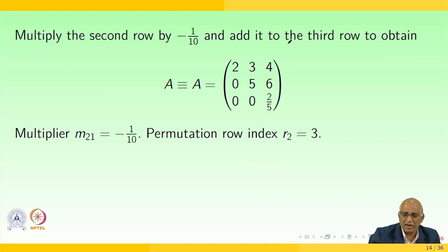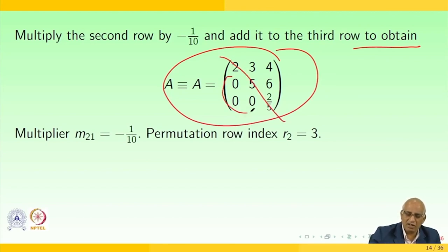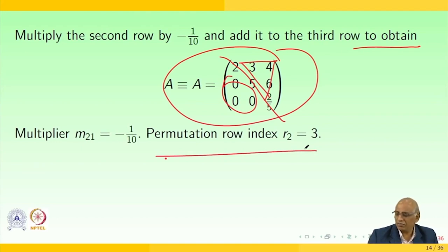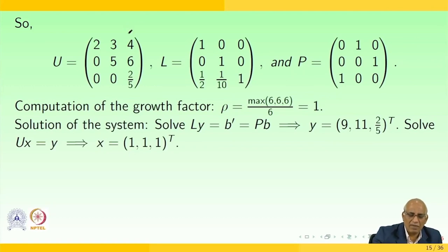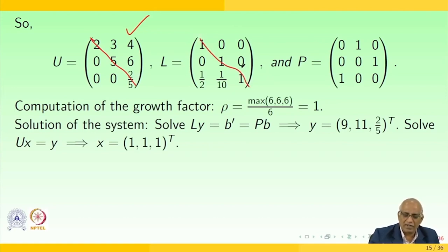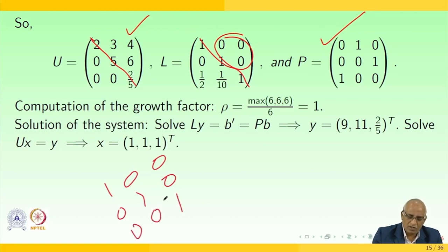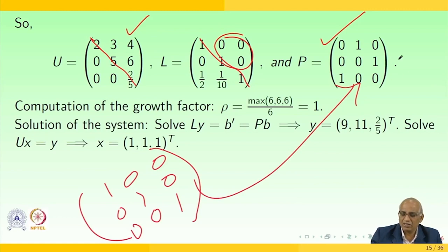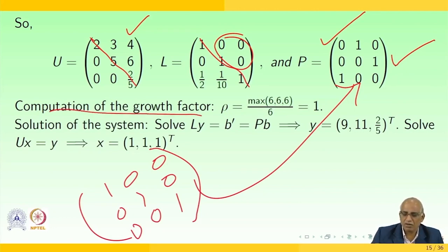The resulting matrix has the main diagonal with non-zero values and zeros below. The permutation row indices are R1=2, R2=3. You have an upper triangular matrix U. Using the multipliers, construct a lower triangular matrix L, with all zeros in the appropriate positions. The permutation matrix is obtained by applying row interchanges to the identity matrix. The growth factor rho equals maximum of 6, 6, 6, 6 divided by 6, which equals 1.